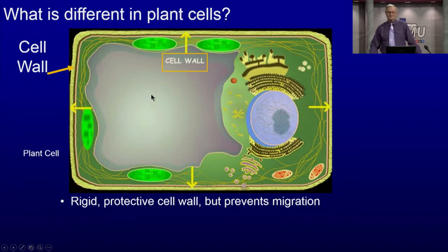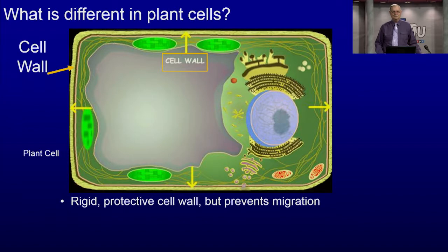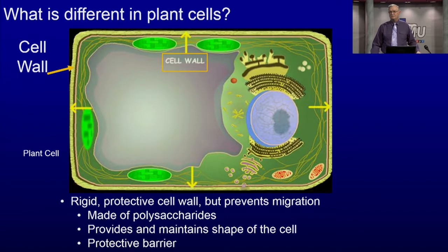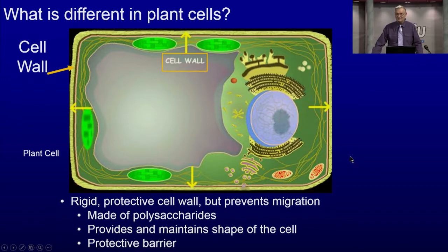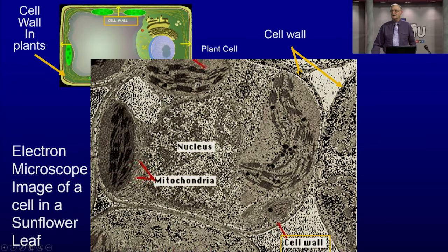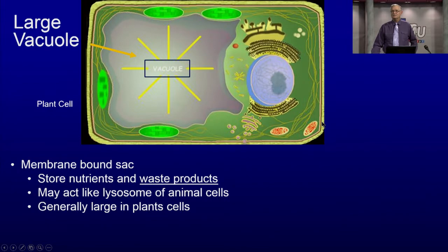What about plant cells? They have a cell wall — rigid and protective — outside the cell membrane. As a consequence, it prevents migration; plant cells from a leaf can't migrate to another place, unlike animal blood cells. The cell wall is made of sugar substances, maintains the shape of the cell, and is a barrier. When we kill bacteria, we are essentially killing their cell wall. Here we can see an electron microscopic view of the cell wall outside the cell membrane, along with chloroplasts.